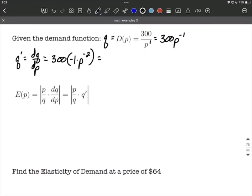Now cleaning this up, 300 times negative 1 is negative 300. But to get rid of a negative exponent, I can move that back down to the denominator. So it's negative 300 over P to the positive second power, and that's our derivative.